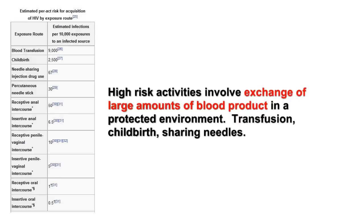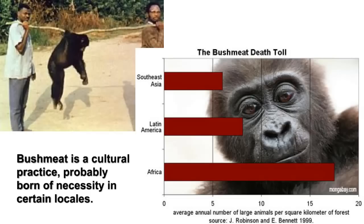We know that SIV and HIV are both spread in the same ways: sex and blood transfers. Blood-to-blood exposures, however, are 900 times more likely to result in infection than sex contact. It's therefore likely that the transmission from primate to human — called a zoonotic event — was the result of hunters trapping, butchering and eating chimps. The practice of hunting primates for what is called bushmeat is well documented in tribal groups in certain areas.